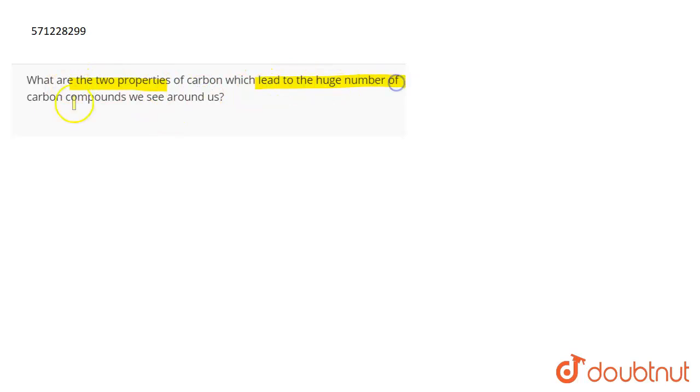So the first property that is responsible for it is tetravalency. Tetravalency means it has a valency of four, and valency of four means that carbon can form four bonds.